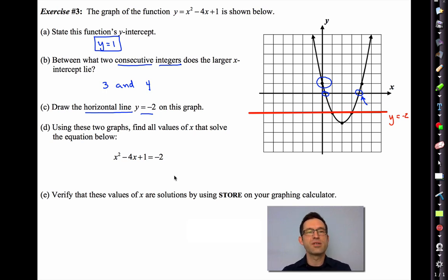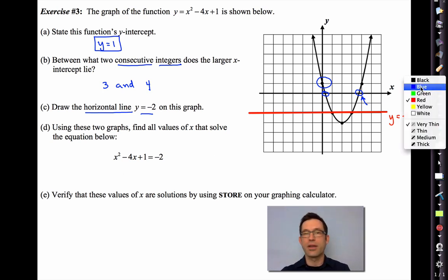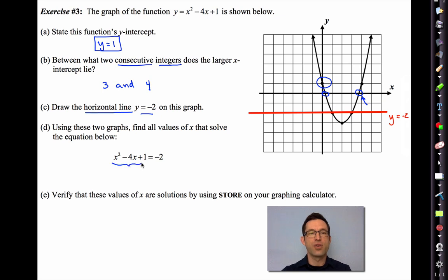Using these two graphs, find all values of x that solve the equation below. Remember when I'm solving an equation graphically and I have this equation graphed and I have this equation graphed, then all I have to do is come up with the x values. In this case, x equals 1 and x equals 3. 1 and 3 where they intersect.